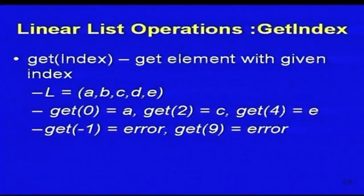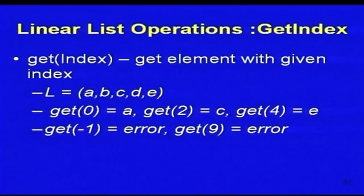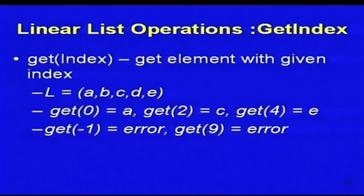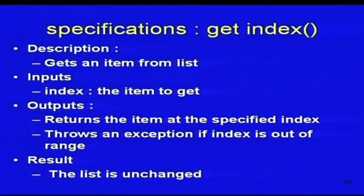Next is an important operation of a linear list: get an element at a specific index. For example, given list L = [a, b, c, d, e], if you call get(0) you get 'a', and if you call get(2) you get 'c'. If you give invalid indexes like -1 or 9 (where the maximum valid index is 4), you will get an error. The description is: given an index, get the item from the list. The input is the index; the output is the item at that index, or an exception if the index is not valid. The list remains unchanged.